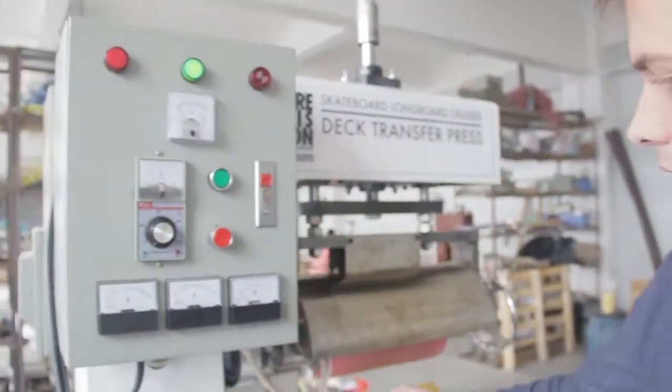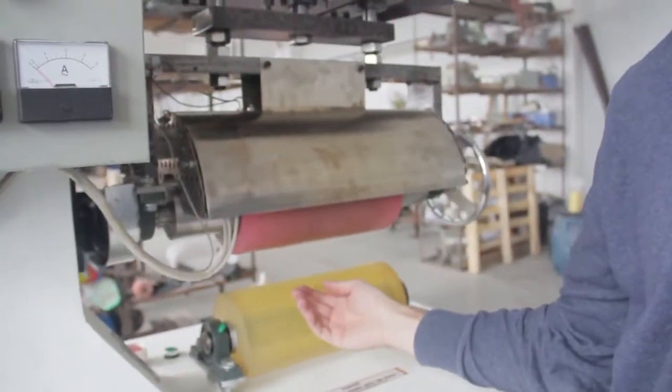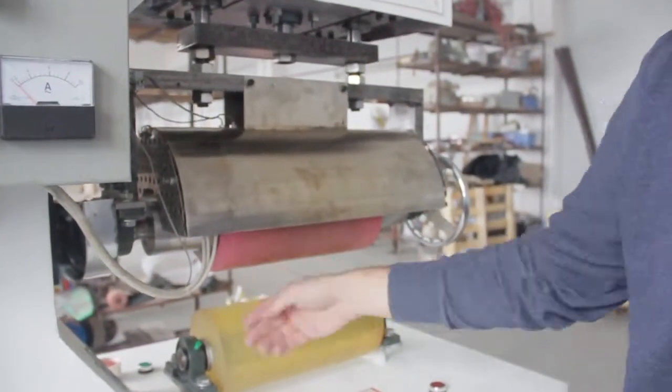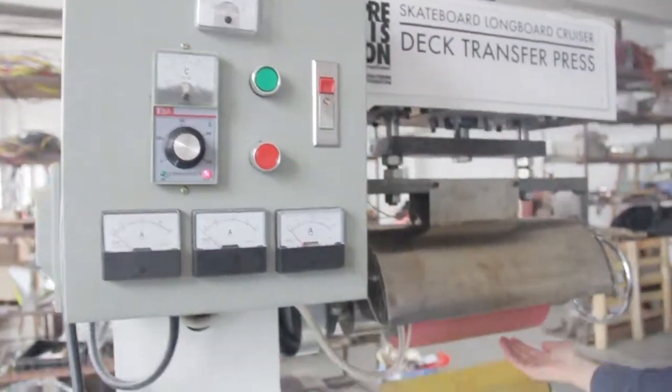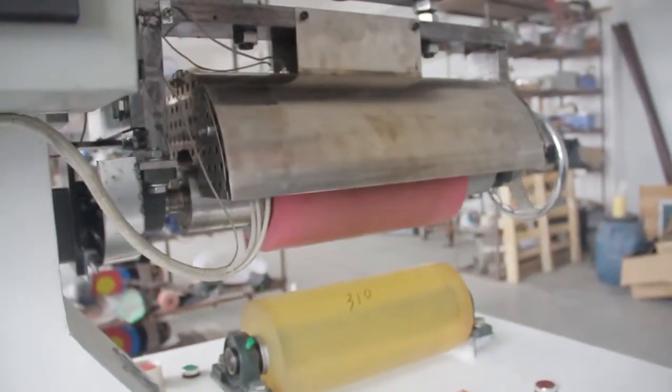We now turn on the motor before turning on the heat. So we turn on the motor by pressing the green button. So as you can see, the transfer wheel is spinning.